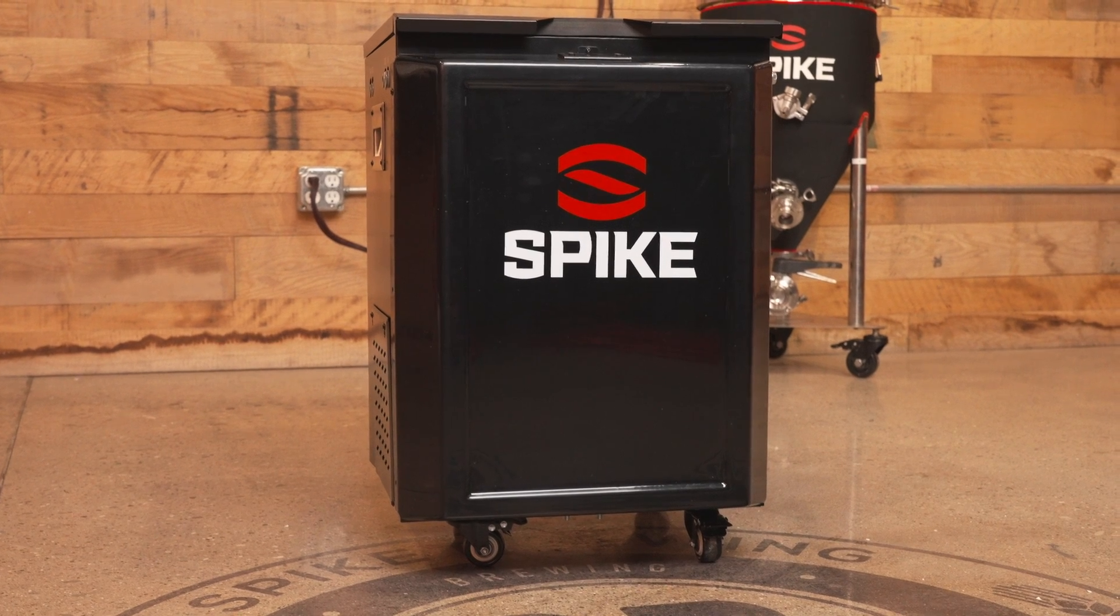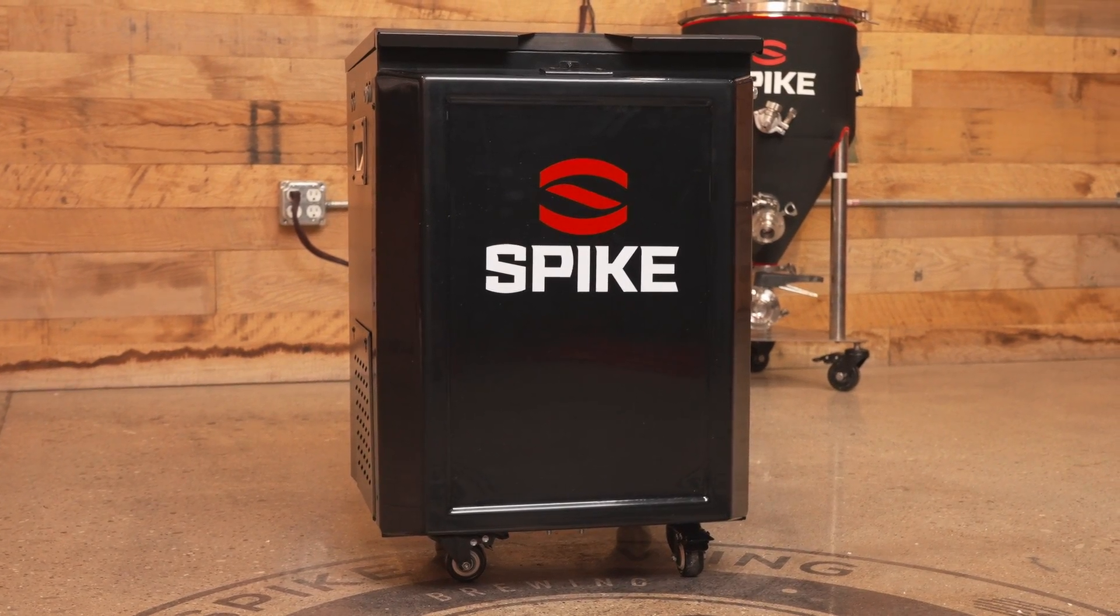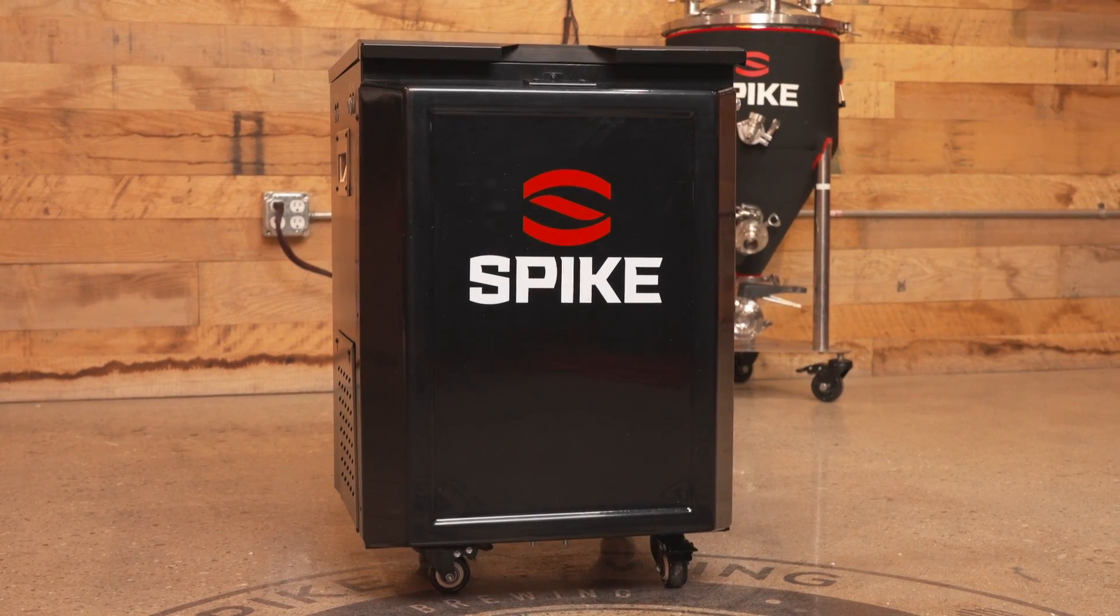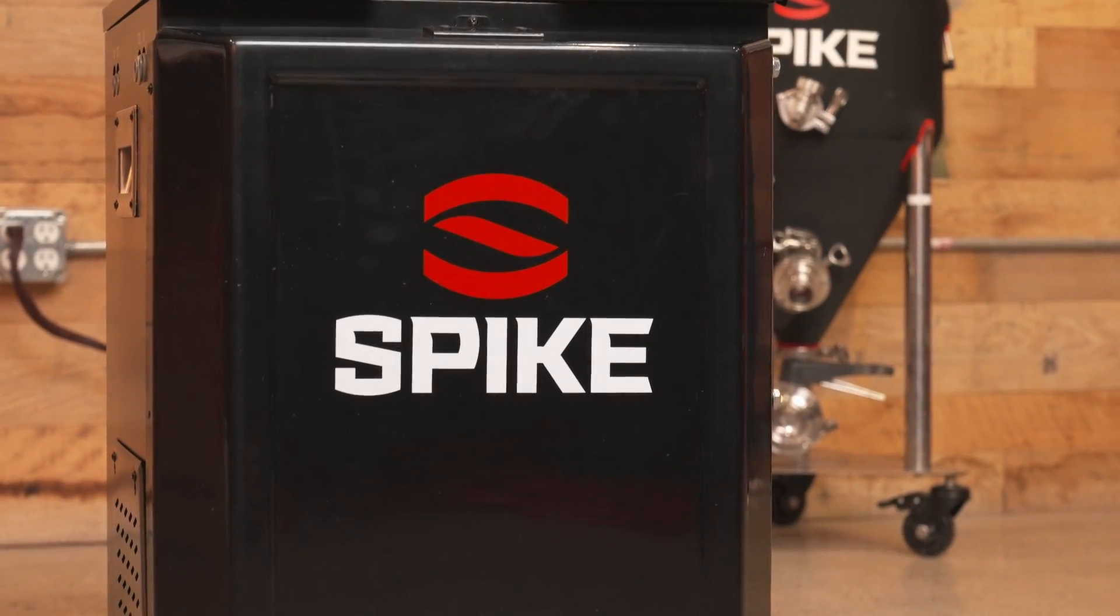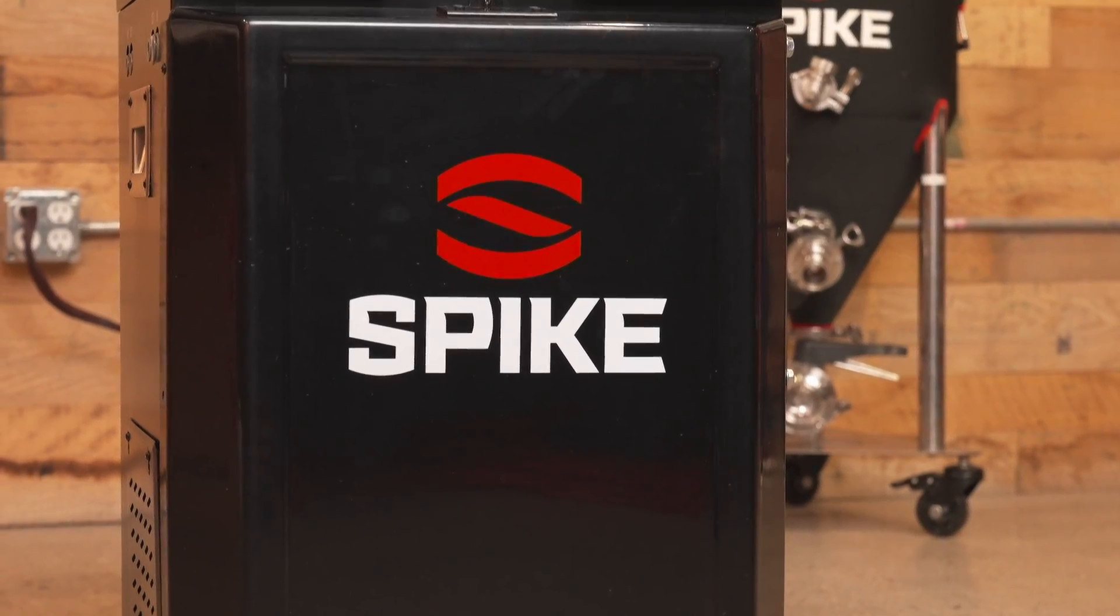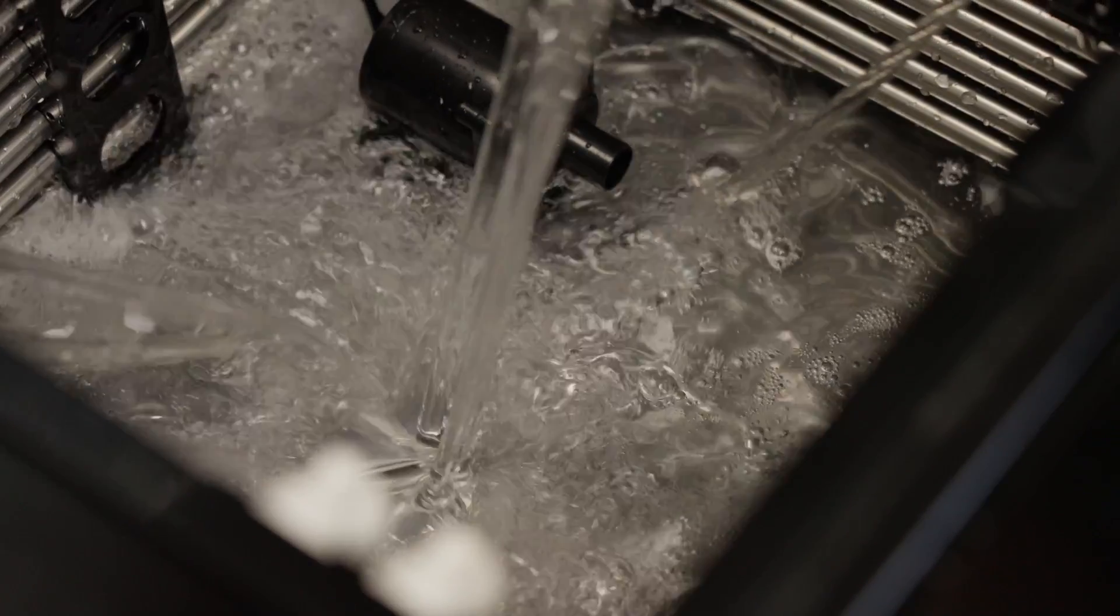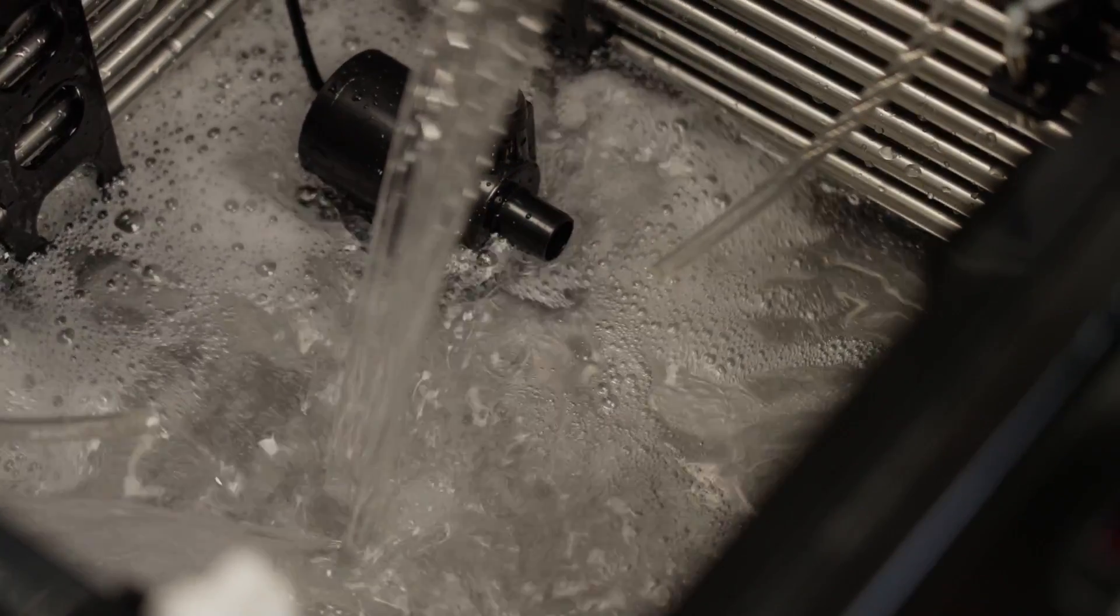Pro tip, a distilled water to glycol ratio is a two to one ratio, two parts distilled water to one part glycol. Fill the tank until the coils are submerged with a two to one distilled water to glycol mix.